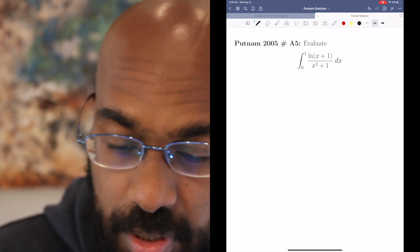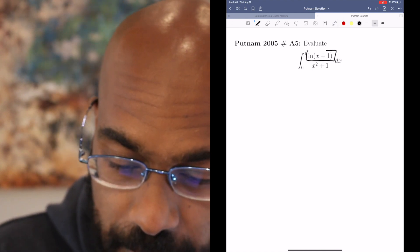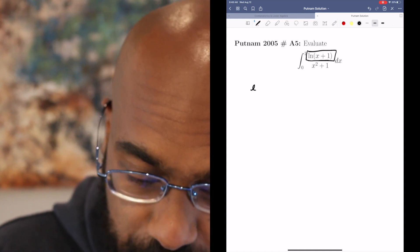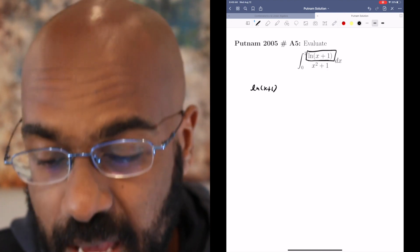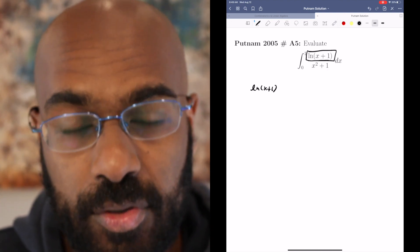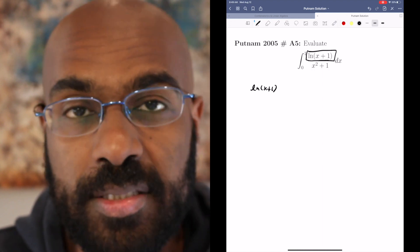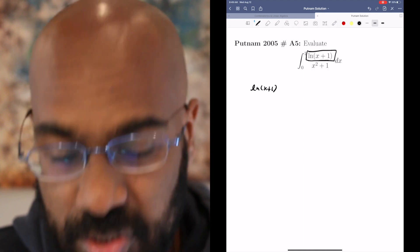So this particular problem, what we're going to do is take the numerator, separate it out, and write it as an integral in another variable. Then we'll compute the double integral that comes as a consequence and find interesting ways to do that.